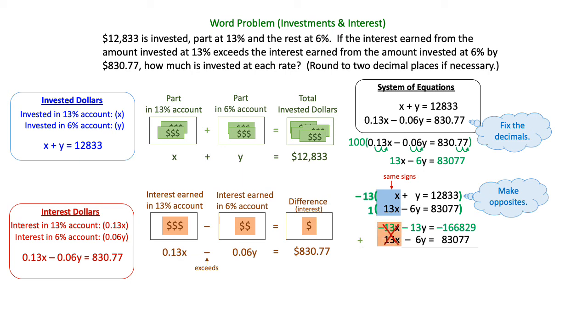When I add the two equations together, my X terms eliminate, which is what I wanted. I have negative 13Y minus 6Y, which is negative 19Y. And then I have negative 166,829 plus 83,077, and that gives me negative 83,752.